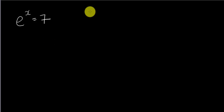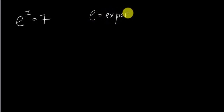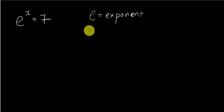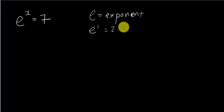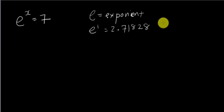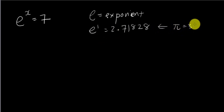So let me explain what 'e' is first. Basically, 'e' is like pi — it has its own fixed value. If you use the calculator and type e^1, it will give you approximately 2.71828. So I always tell my students that 'e' is something like pi, just as pi is 3.1416.